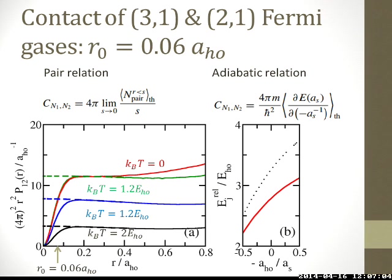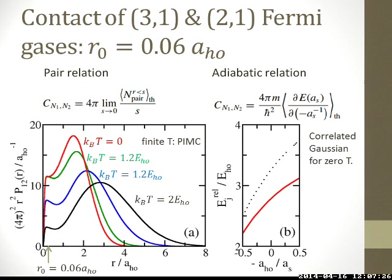Regarding the zero-temperature calculation: for the T equals zero case, we use the correlated Gaussian method — that is exactly at zero temperature. Only the finite-temperature curves are calculated using the path integral Monte Carlo. The path integral Monte Carlo signal-to-noise ratio goes to exactly zero at zero temperature, so that method cannot be used there. The zero-temperature curve in the pair distribution function is calculated by a different, essentially exact method, shown just for comparison.